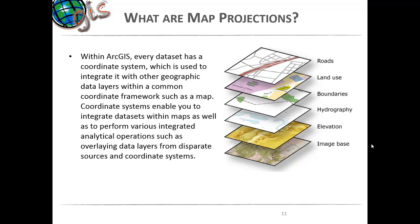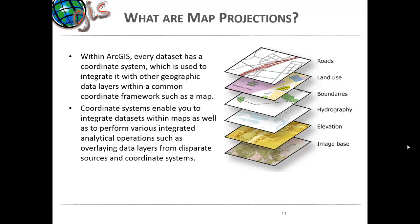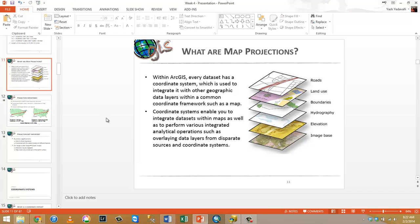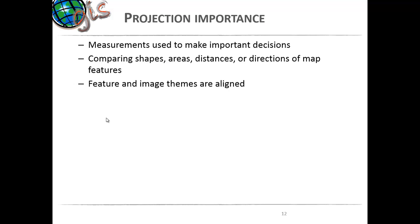So let's talk about map projections. Within GIS, every dataset we use has a coordinate system in which it was created. This coordinate system is used to integrate it with other data layers within a common framework such as a map. The coordinate system is pretty critical because it enables you to overlay all these layers on top of each other so that you can perform advanced analysis and operations. Map projection is important because measurements need a common reference, and GIS is all about comparing shapes, areas, distances, and directions of map features.